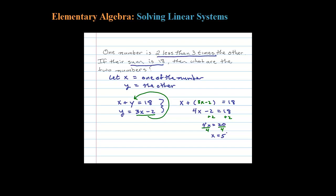So that tells me one number is 5. Now for the other number: y, after we back substitute, is 3 times x minus 2. So back substituting in 5, we can figure that out here.